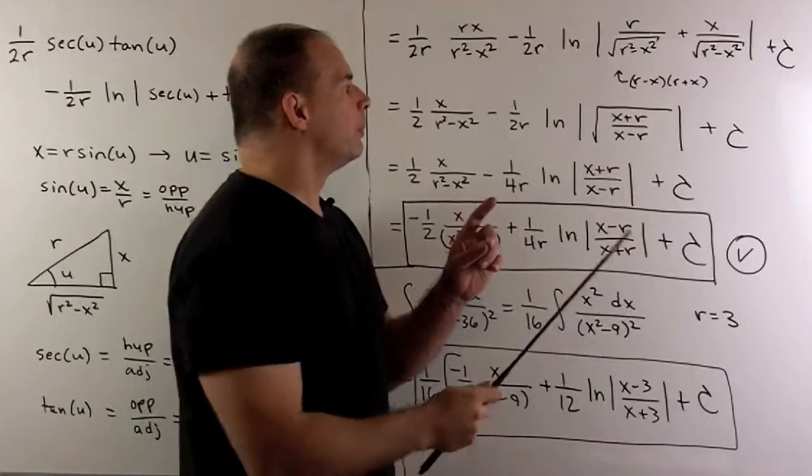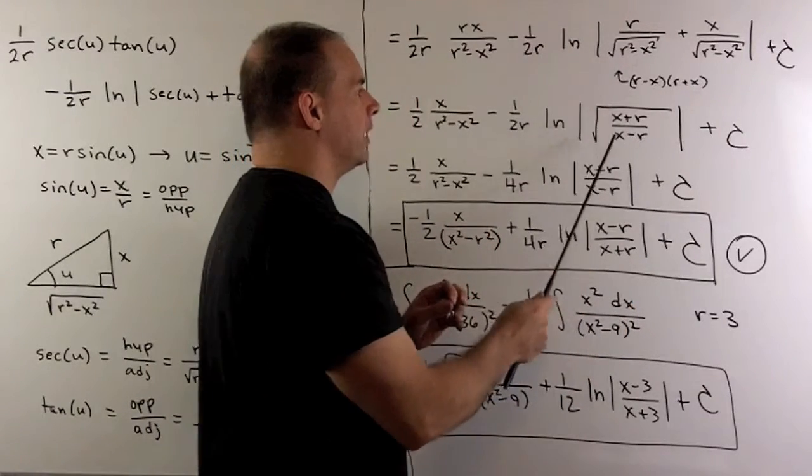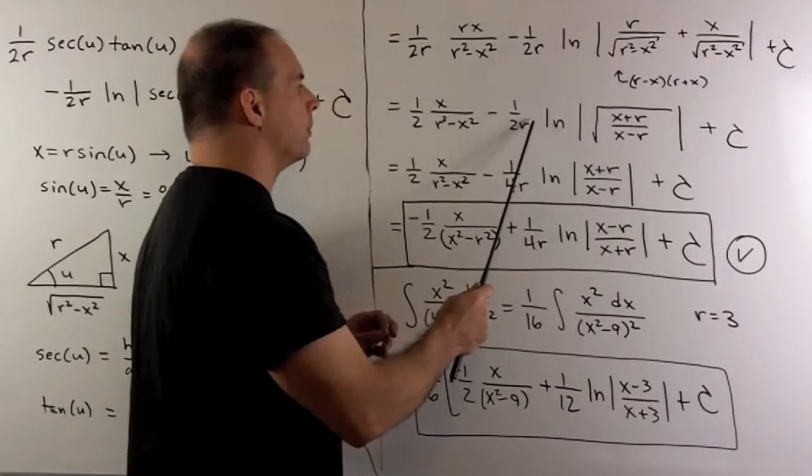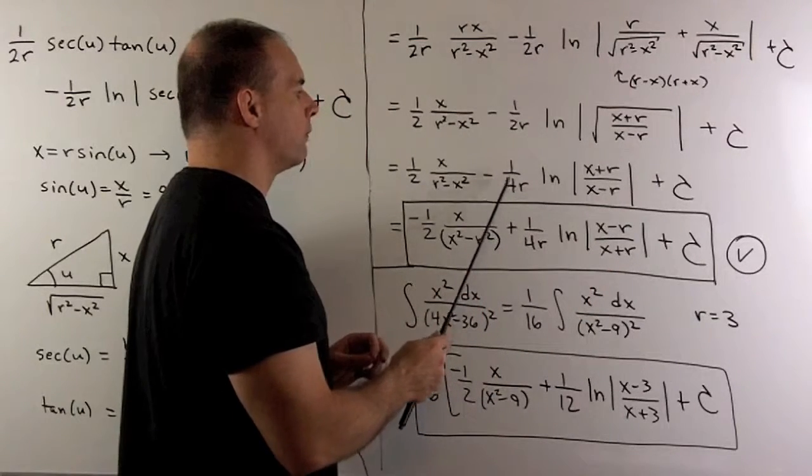Now, logarithm rule. If we have an exponent, and here the exponent is 1/2, we can bring that down in front. So, it turns our 1/2 into a 1/4.